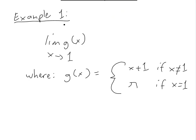So example one states: find the limit of g of x as x approaches one, where g of x is a two-part function — it equals x plus one if x is not equal to one, and it equals pi if x equals one.